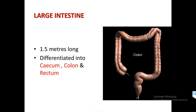The large intestine is also a part of the alimentary canal and can be considered as almost the last part, because after the large intestine ends, comes the anus, which is used for ejection of food that is not absorbed or used by the body. The difference between large and small intestine is that even though the length of the small intestine is more, its diameter is less. So the basis of differentiating these two is the diameter, not the length.